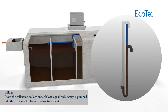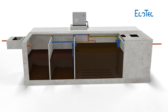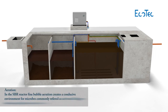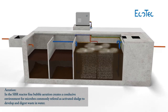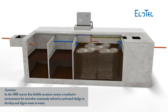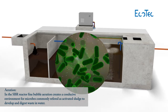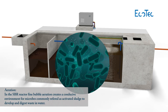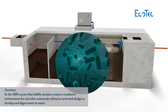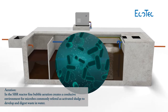Accumulated sewage is pumped into the SBR reactor for treatment. Aeration in the reactor further purifies the wastewater. Fine bubble aeration supplies oxygen to the microbes. Microbes, also called activated sludge, multiply and consume waste in the water.